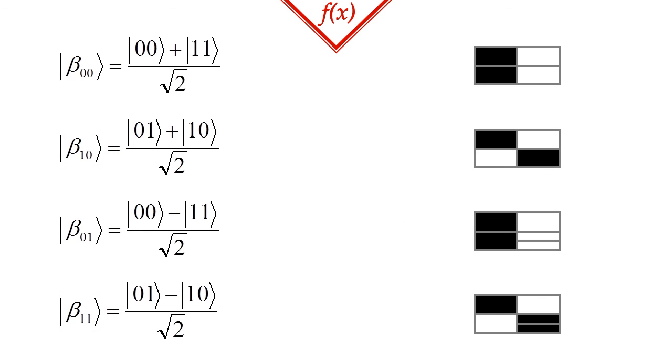The bell states also form an orthonormal set, which means, that if we know that our two qubits are in one of these states, then with the right measurements, we will be able to accurately determine which one. This will be useful later on for communication protocols.